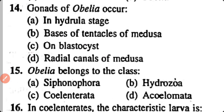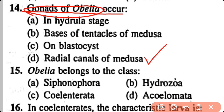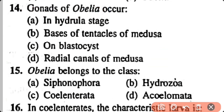Question number 14. The gonads of Obelia occur in: Hydra stage, bases of tentacles of Medusa, or radial canal of Medusa. Correct answer is option D. The gonads of Obelia are present on the radial canal of Medusa.